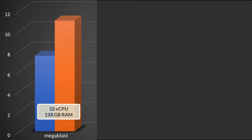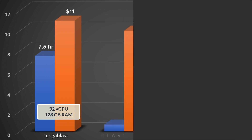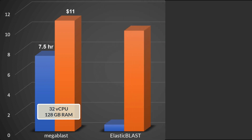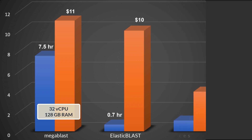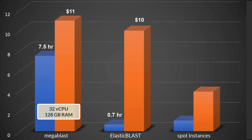A default Mega BLAST search on the cloud with 32 virtual CPUs and 128 GB of RAM took about 7.5 hours to run, at a cost of about $11. Elastic Blast completed the same task in about 40 minutes — more than 10 times faster — and at a slightly lower cost of $10. You can reduce the cost further by choosing Spot instances, as they are called at AWS. In our test, the cost was under $4 and took just over one hour to run.